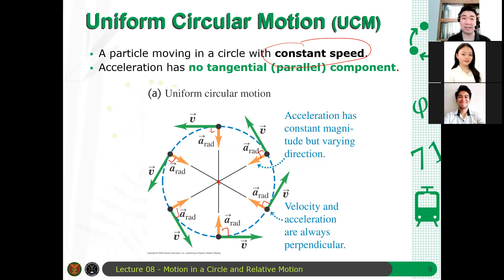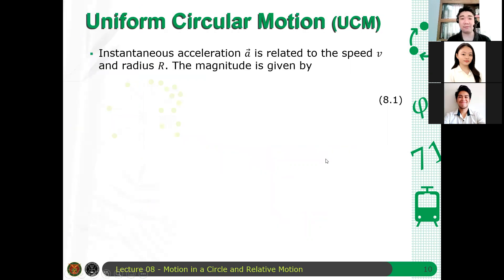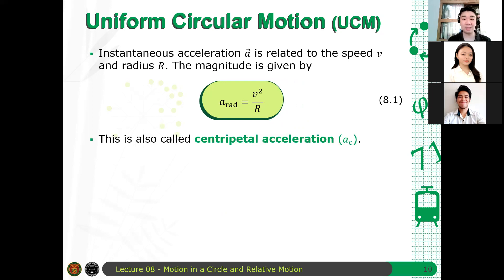Apparently, may proof, pero hindi ko na ipapakita dito. Let's check your resources. Andun yung proof kung bakit nagigano yung equation. But it turns out that if A is the magnitude of the centripetal acceleration vector, then A is related to the speed of the particle V and the radius of the circle R by this equation. A is V squared over R. Or the radial acceleration, the magnitude of the radial acceleration, is V squared over R. Ang tawag dyan ay centripetal acceleration, AC. Sinasabi ko, centripetal kasi center seeking. Centripetal means center seeking.